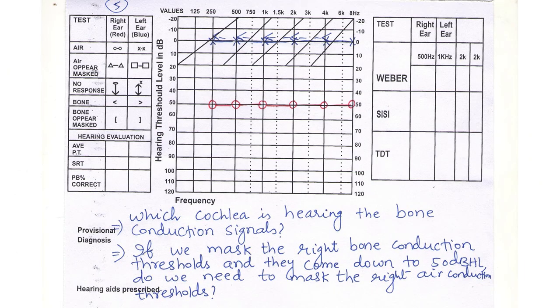And the last one, audiogram number 3: which cochlea is hearing the bone conduction signals? Query number 1 and query number 2 is: if we mask the right bone conduction thresholds and they come down to 50 decibel hearing level, do we need to mask the right air conduction thresholds?